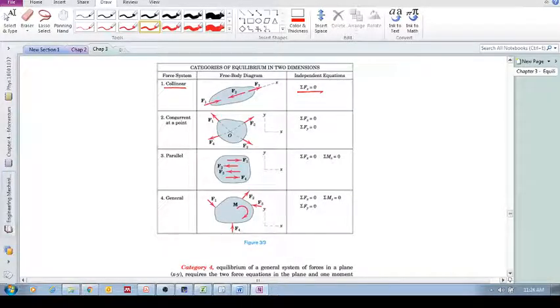Another category is the forces are concurrent at a point. They've all passed through a single point. So in this case, you can see that there will be no rotational effect because they all pass through the same point. So all we need to do to determine the equilibrium of the body is use these two equations. These two equations need to be satisfied.